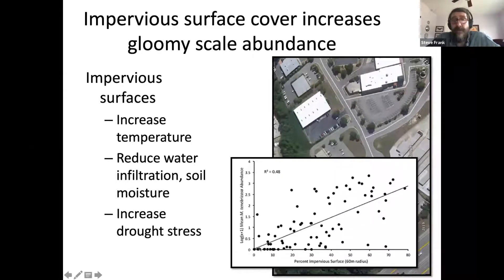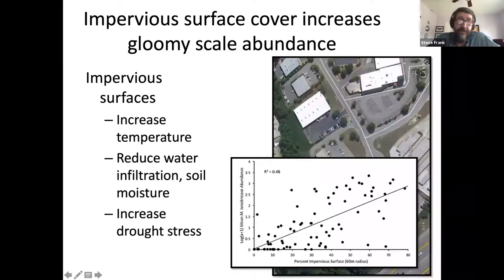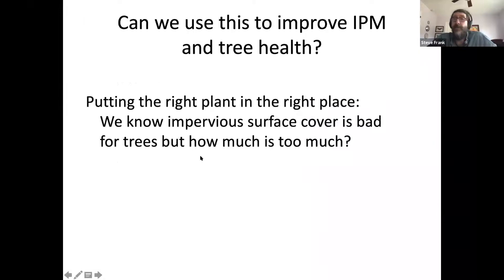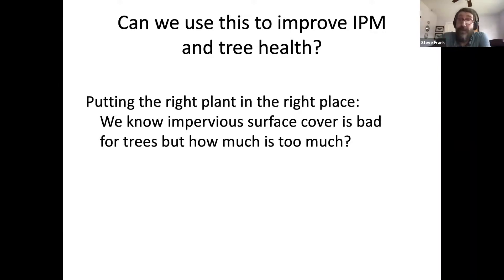If we just graph the relationship between the amount of impervious surface around a tree and the abundance of gloomy scales, there's a pretty strong linear relationship: more impervious surface equals more gloomy scales. So can we use this relationship to improve IPM and tree health? We know a basic tenet of arboriculture and IPM is to put the right plant in the right place. We know impervious surface cover is bad for trees and good for gloomy scales. So we set out to find how much is too much.